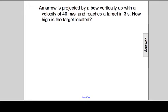An arrow is projected vertically by a bow with an initial speed of 40 meters per second and reaches a target in three seconds. How high is the target located?